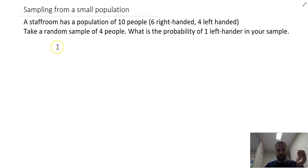We're going to be sampling from a small population here. Jumping straight into a question, a staff room has a population of 10 people, six right-handers, four left-handers. Take a random sample of just four people from that group. What is the probability of one left-hander in your sample?